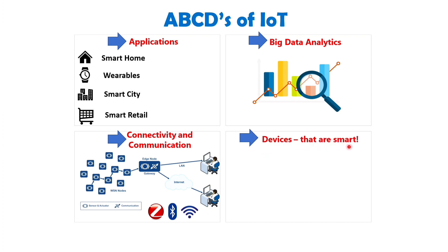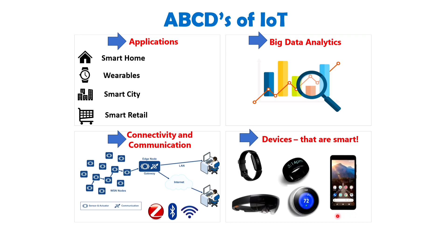Lastly, D represents Devices that are smart in nature. Examples include smartphones, smart glasses, smart sensors, fitness trackers, and smartwatches. These devices play an integral role in the functioning of an IoT system. These four pillars — Applications, Big Data, Connectivity and Communication, and smart Devices — collectively form the foundation of any IoT system. Each component is essential, and the absence of even one of them would hinder the creation of a sustainable IoT system.